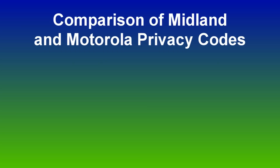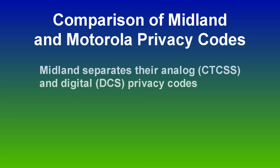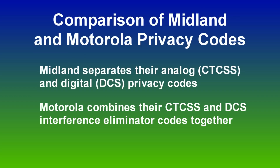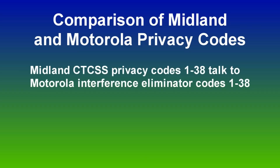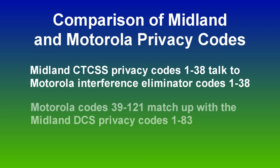On the GXT1000's, CTCSS codes 1 through 38 will talk to the interference eliminator codes 1 through 38 on the Talkabout. Here's where it gets goofy. Midland breaks the 142 codes down by CTCSS codes and DCS codes, while Motorola runs them all together, basically 1 through 121. Number 39 is when you start to get into the DCS codes.